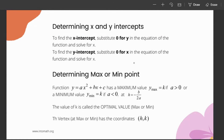In order to determine the x and y intercepts, we substitute 0 for the opposite value. If we're solving for the x-intercept, we substitute 0 for y; if we're solving for the y-intercept, we substitute 0 for x. In order to determine the max and min points, we look at the function values. y equals ax squared plus bx plus c has a maximum value of y-max equals k if a is less than 0, or a minimum value of y-min equals k if a is greater than 0, at h equals negative b over 2a. The value of k is called the optimal value. The vertex at max or min has the coordinates h, k.